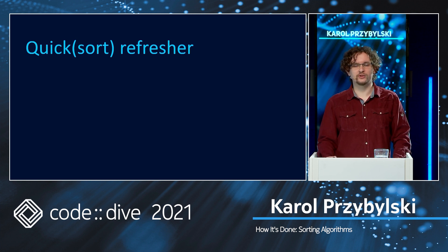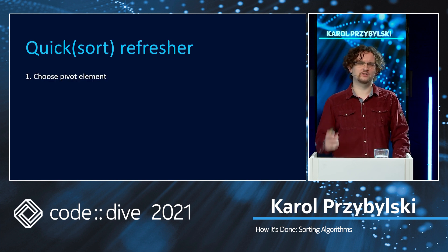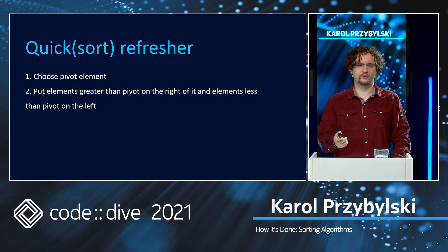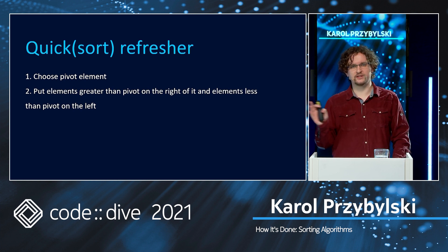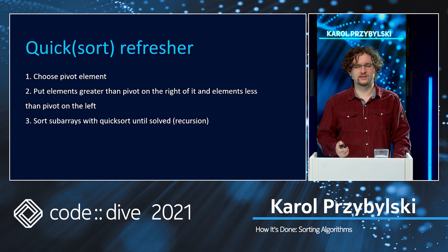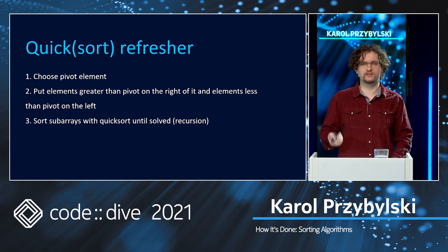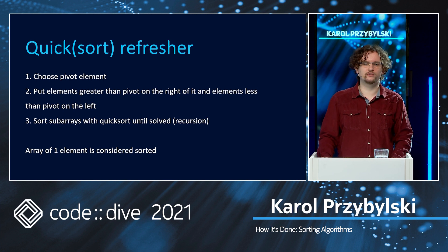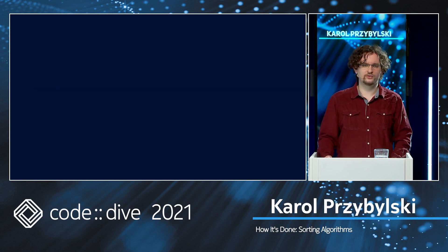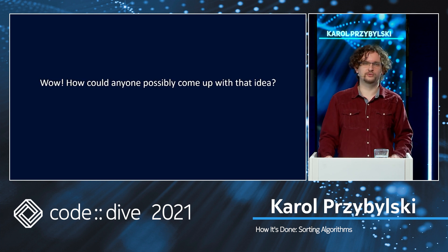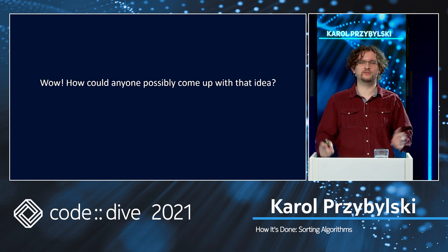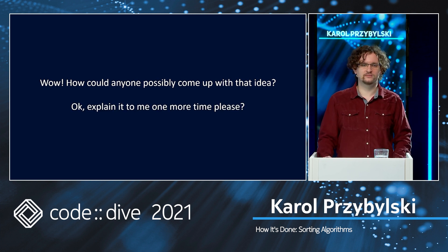I don't expect you to remember all the details of how Quicksort works, but let's do a quick refresher. First order of business is to choose the pivot element. Then we put the elements greater than pivot on the right and elements less than the pivot on the left. Then we have received subarrays, and we are sorting these subarrays using Quicksort until they are sorted. We should remember that an array of one element is considered sorted. Usually when people start learning about Quicksort, two things pop into their minds: first, 'wow, how could anyone possibly come up with that idea?' — usually quickly followed by 'okay, explain it to me one more time, please.'